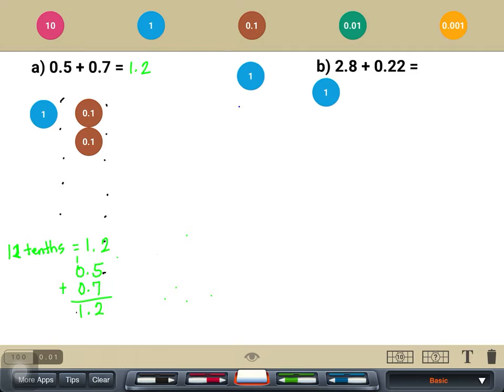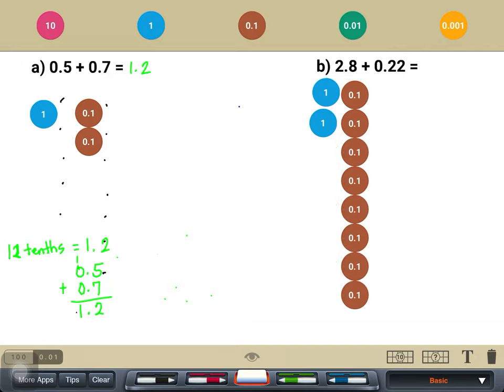So, 2 and 8 tenths is 2 ones and 8 tenths: 1, 2, 3, 4, 5, 6, 7, 8. And 22 hundredths is 2 tenths and 2 hundredths.